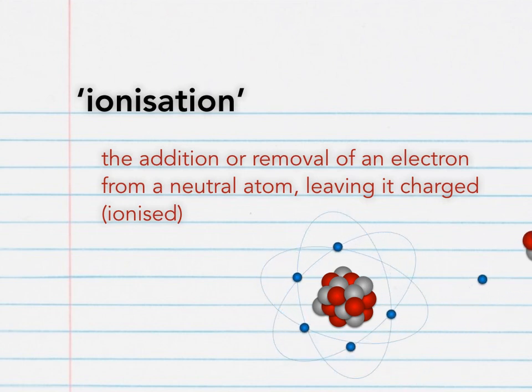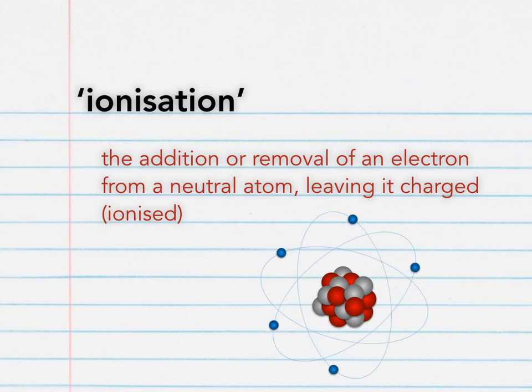As the negatively charged electron is removed from the neutral atom, it is then left positively charged — a positive ion.